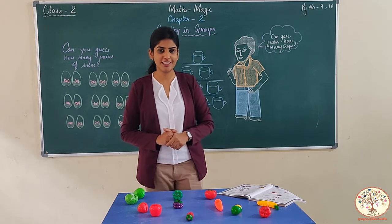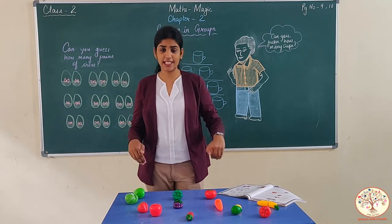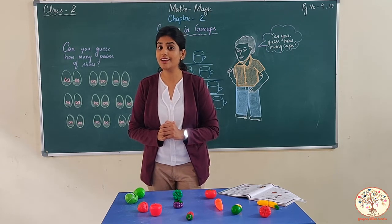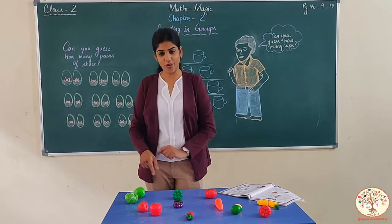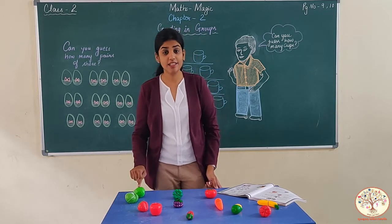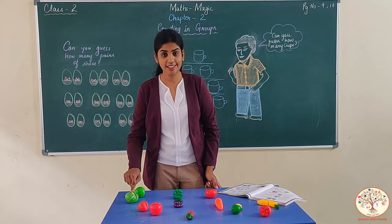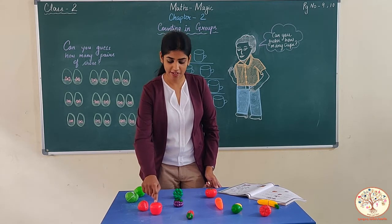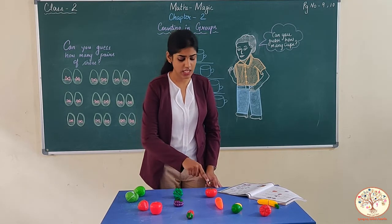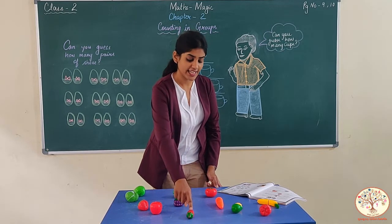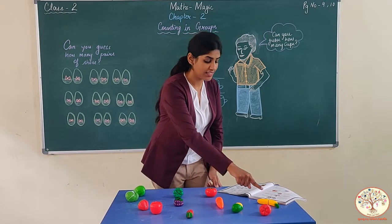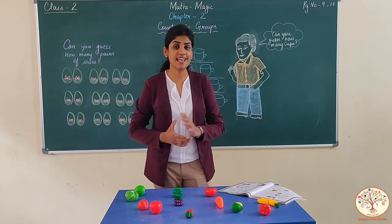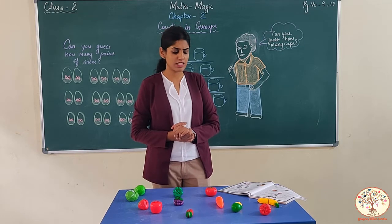Do you know how to count? Let's count the things kept on the table. We start counting with number 1. Let's start: 1, 2, 3, 4, 5, 6, 7, 8, 9, 10, 11, 12. So, how many things are there on the table? 12 things.